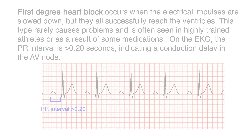Here's further explanation. First degree heart block occurs when the electrical impulses are slowed down, but they all successfully reach the ventricles. This type rarely causes problems and is often seen in highly trained athletes or as a result of some medications. On the EKG, the PR interval is greater than 0.2 seconds, indicating a conduction delay in the AV node.